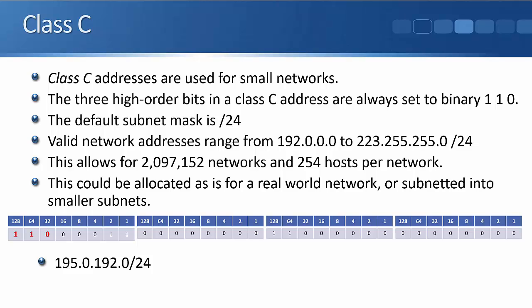With class C, it's the first three bits that are important — they're always set to binary 1, 1, 0. The valid network addresses range from 192.0.0.0 to 223.255.255.0. That allows for a little over 2 million networks and 254 hosts per network.